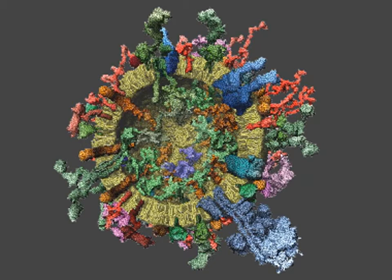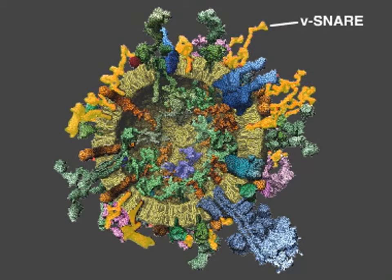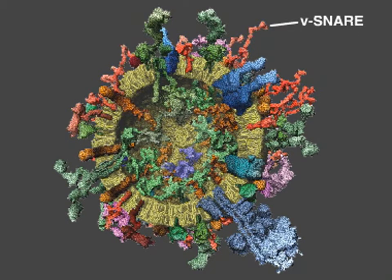The most abundant protein is a SNARE protein called V-SNARE. This molecule participates in membrane fusion at the synaptic terminal, and there are about 70 copies of this protein per vesicle.